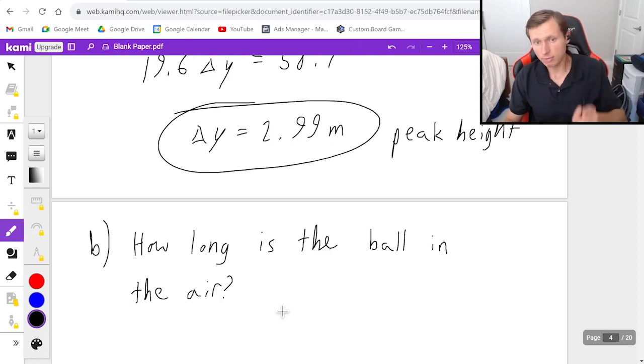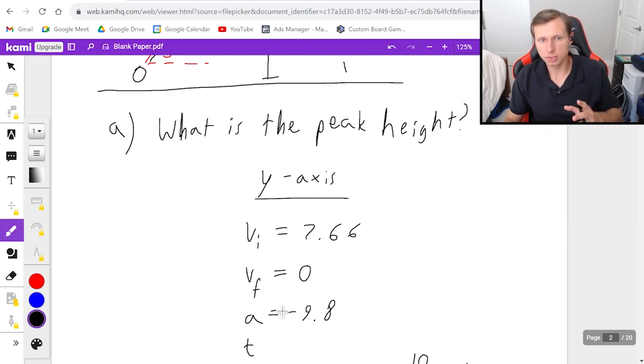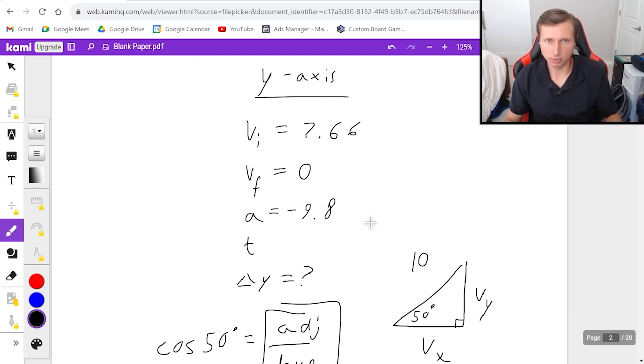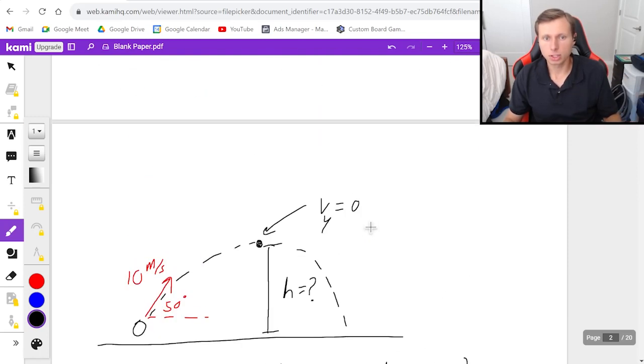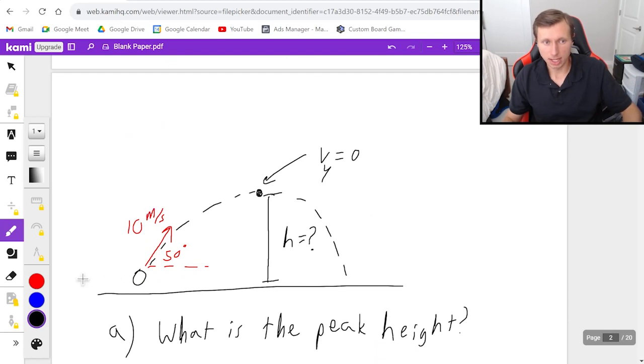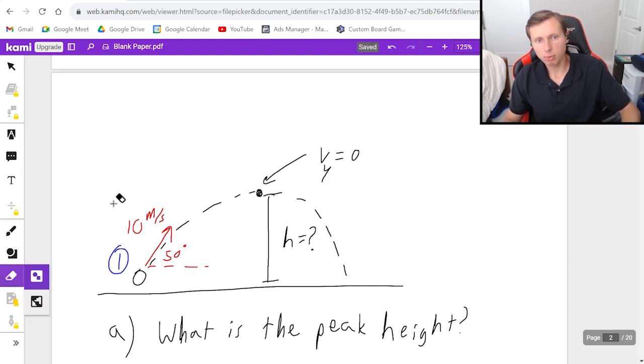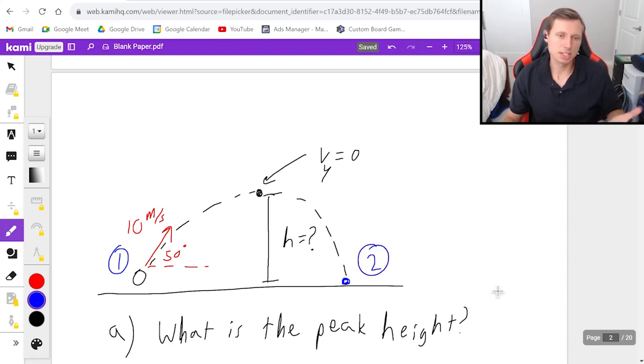Because whenever you use these kinematic variables and filling out this chart right here that you see on my screen right now, that only works for two points in time. And what I mean by that is for the first problem, part A, we looked at this as point 1 and this is point 2. Now we're switching point 2 to be over here when the ball hits the ground. And because of that, we have to start the y-axis over again.